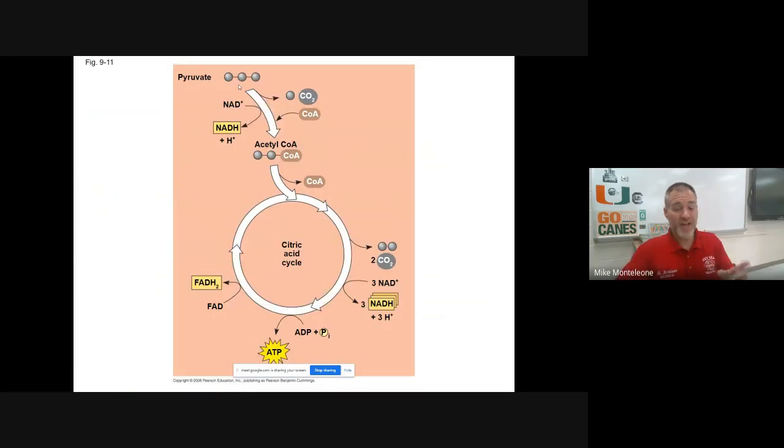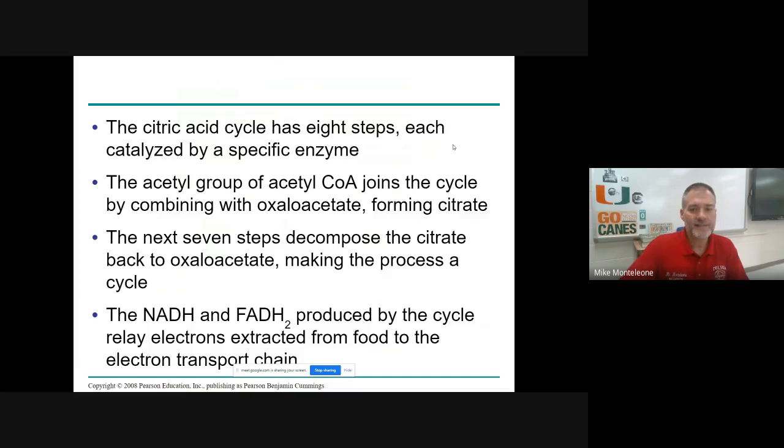So again, this is what happens from one pyruvate turning into one acetyl-CoA. It might be easier just to multiply everything by two since there's two pyruvates. Two NADHs, two CO2s are made here during pyruvate oxidation. They turn into two acetyl-CoAs, which generate four CO2s, six NADHs, two ATPs are made, and two FADH2s as we go around these Krebs cycle reactions. Now again, this is only in the presence of oxygen that this will happen.